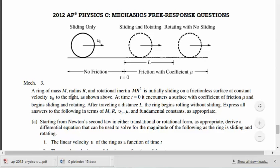So the ring has a mass M. The radius is capital R. The rotational inertia is capital MR squared. That's for a ring or a hoop given. It's initially sliding on a frictionless surface at a constant velocity v naught to the right as shown above. At t equals zero, it encounters a surface with a coefficient of friction of mu and begins sliding and rotating. After traveling a distance L, the ring begins to roll without slipping. Express all the answers to the following terms of MR, V naught, mu, and the fundamental constants as appropriate. So it's going to be an alphabet soup answer.